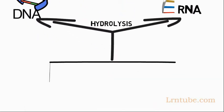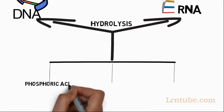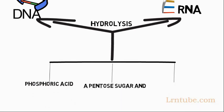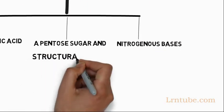A hydrolysis of nucleic acids yields three components: a phosphoric acid, a pentose sugar, and a nitrogenous base.